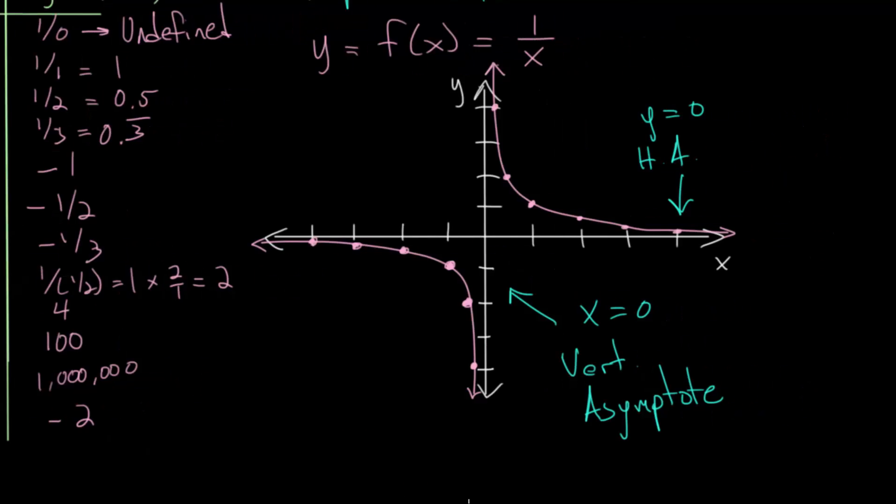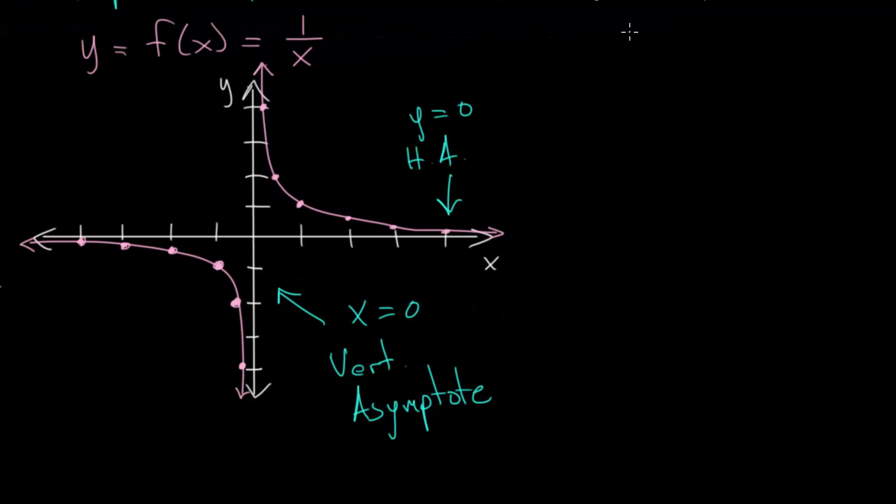And in the next video, we're going to look at the graphs of 1 over x to the 3rd, 1 over x to the 4th, or really any rational function where we have 1 over x to some odd exponent and 1 over x to some even exponent. And we're going to look for patterns.